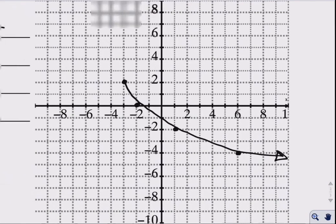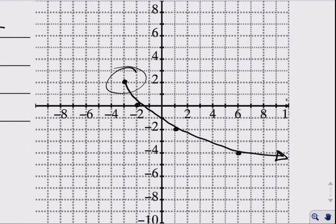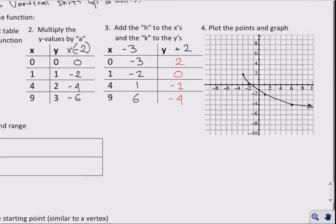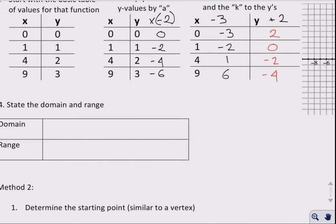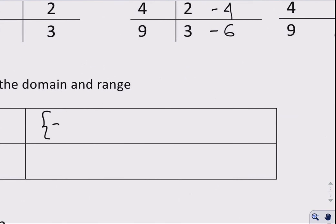But you do not put an arrow at this point because anything less than negative 3, you're going to get negative values under the square root sign. So how does that affect our domain and range? Well, our domain is everything greater than negative 3. So x is a real number, greater than or equal to negative 3.